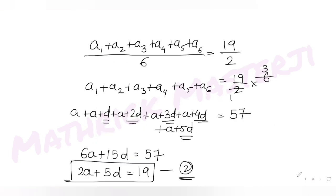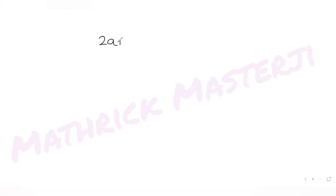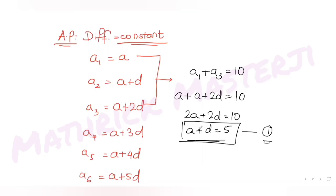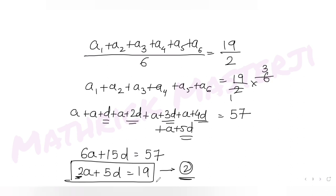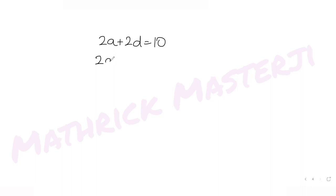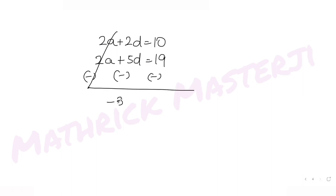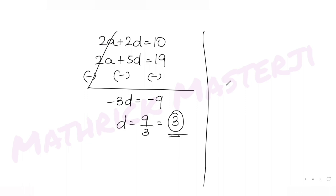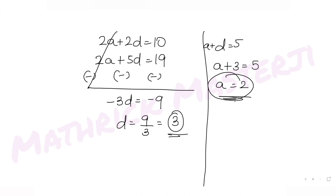Now with equation 1 as 2a+2d = 10 and equation 2 as 2a+5d = 19, I subtract equation 1 from equation 2 to cancel the variable a. This gives -3d = -9, so d = 3. Substituting back into equation 1: a+3 = 5, giving a = 2. So the first term is 2 and the common difference is 3.